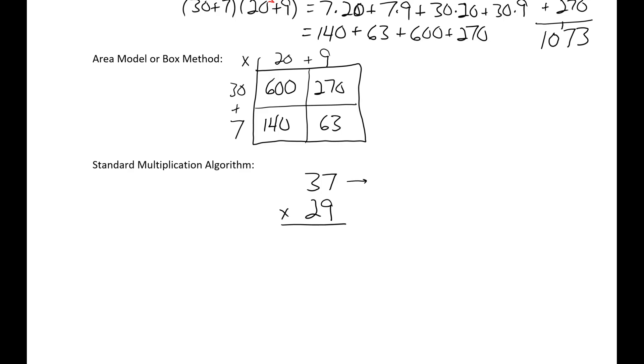And again, you can think of 37 as 30 plus 7. And you can think of 29 as 20 plus 9. And we're just going to multiply our numbers using the distributive property and add them up just like we did before. And here's how that looks.